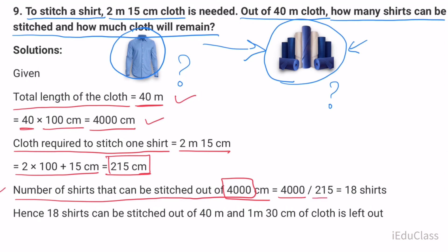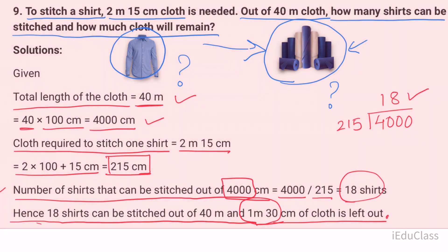Number of shirts that can be stitched out of 4000 centimeters is 4000 divided by 215 equals 18 shirts. Hence, 18 shirts can be stitched out of 40 meters and 1 meter 30 centimeters of cloth is left out.